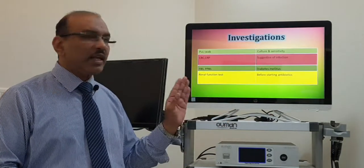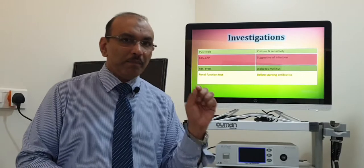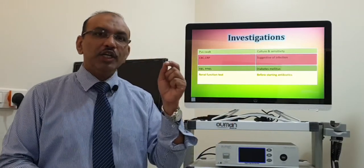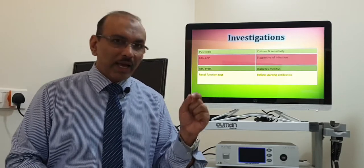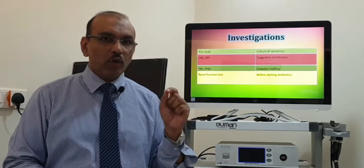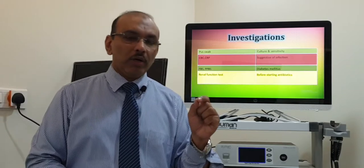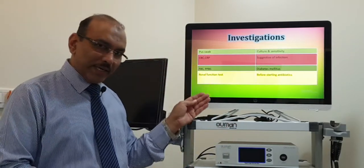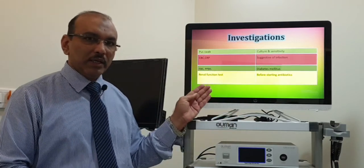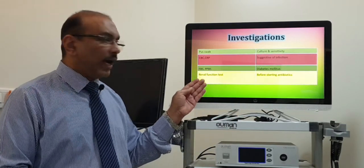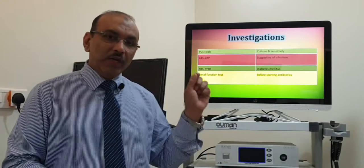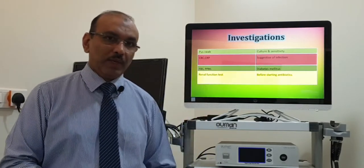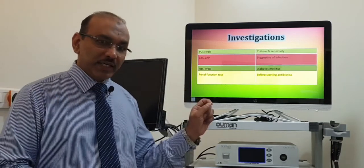Coming to the investigation. When you find pus discharge, we have to take a pus swab and send it for culture sensitivity, so that we can know which bacteria is involved and which specific antibiotic can be given against it. We also need to do blood tests like total count and differential count, along with C-reactive protein, and if the patient is diabetic, we need to work up on that so that blood sugar is well under control.